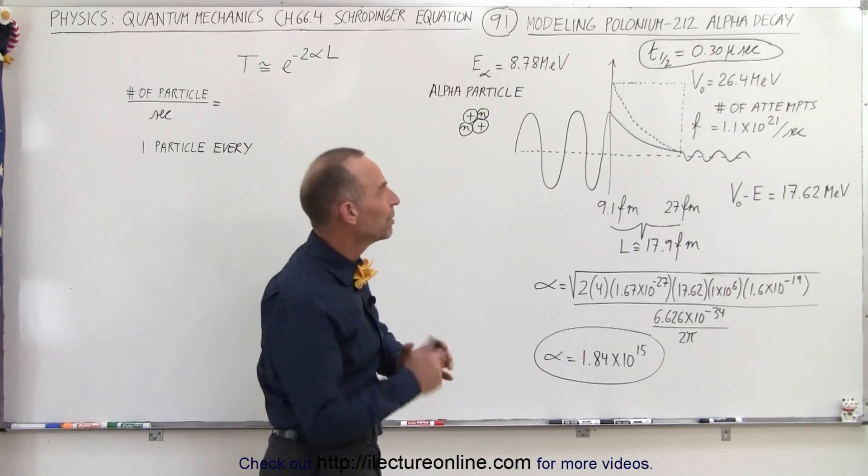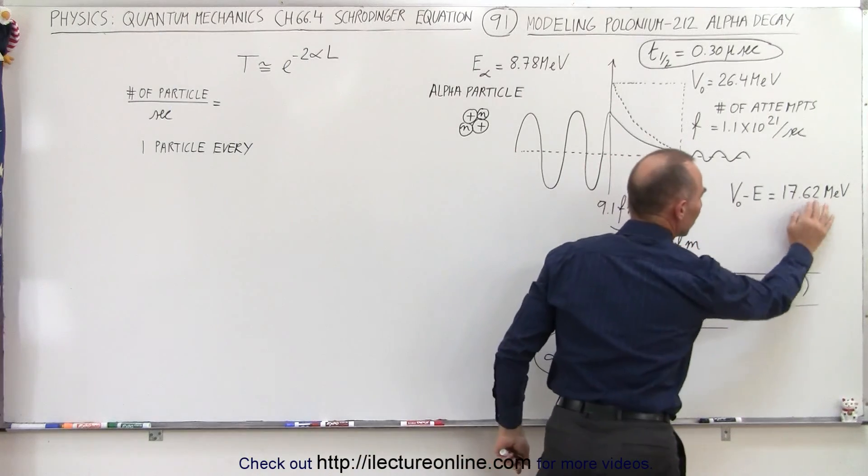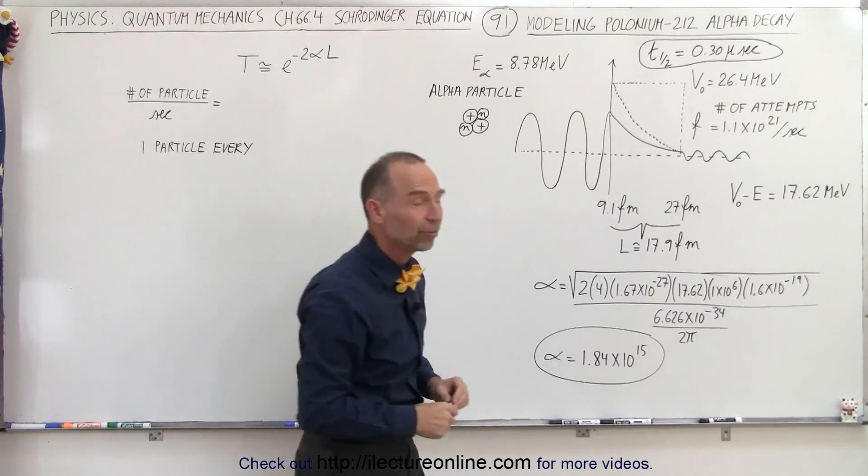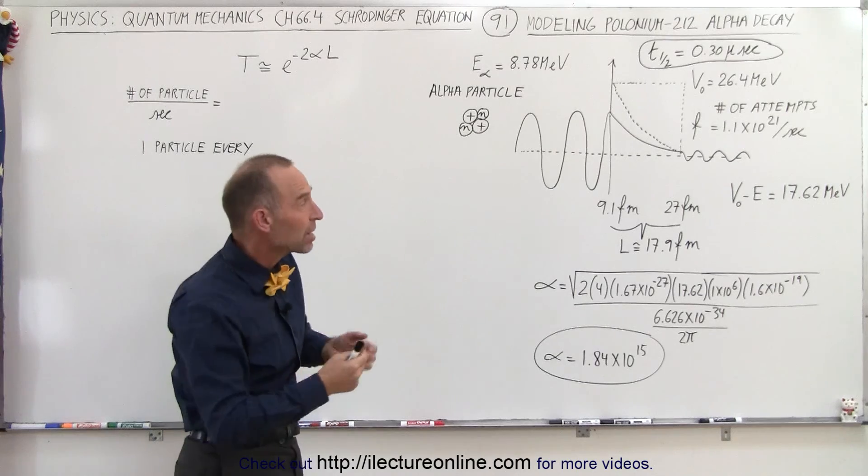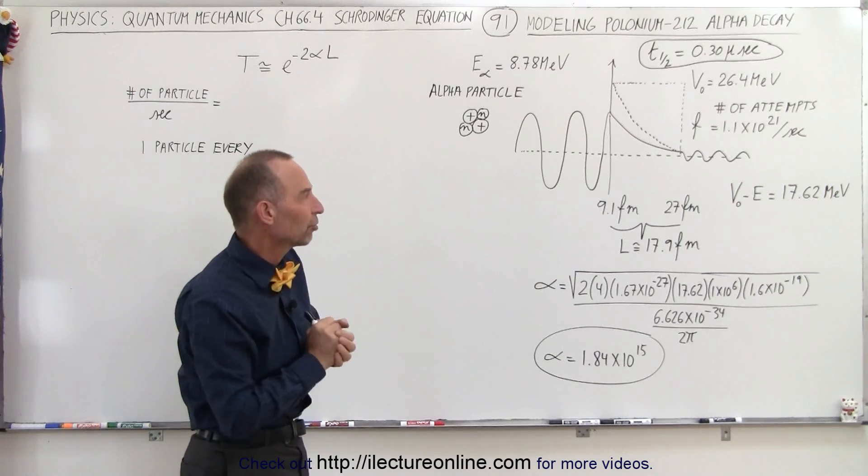So the difference between the two is about 17.62 million electron volts. So what we're going to try to do here is calculate the probability of an alpha particle breaking through that potential barrier.